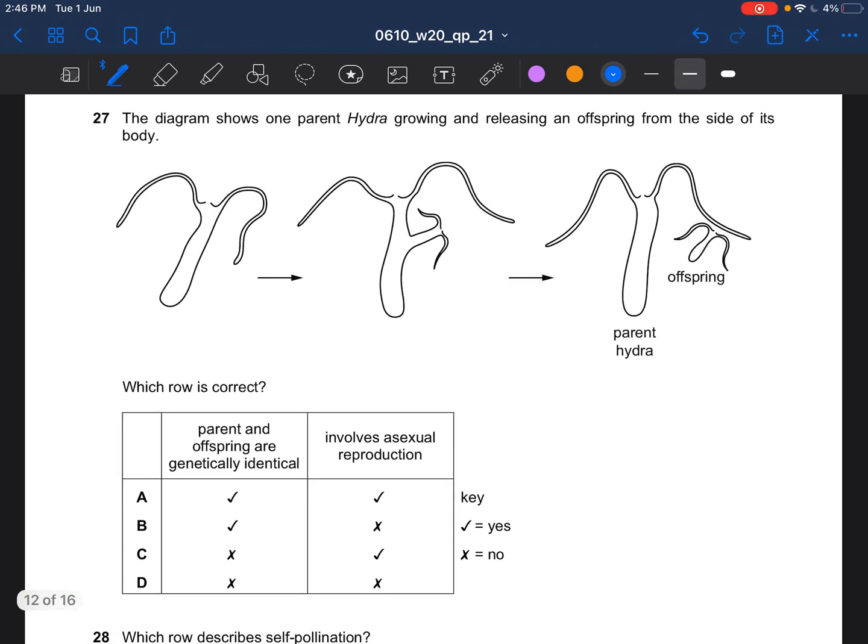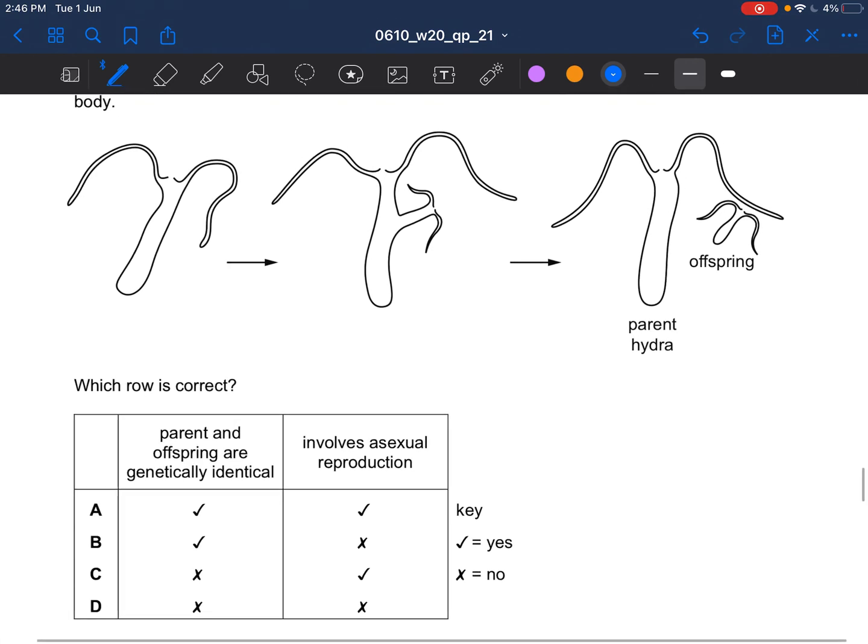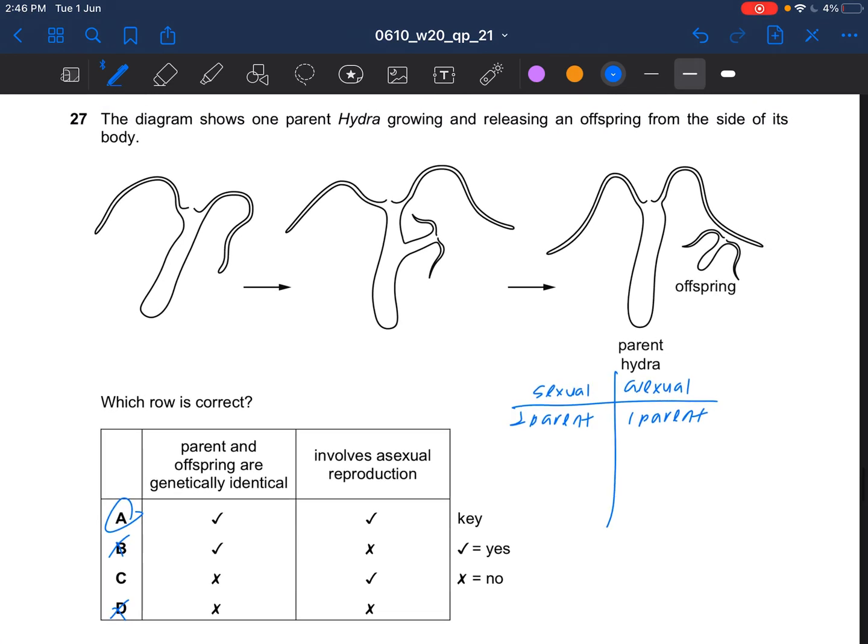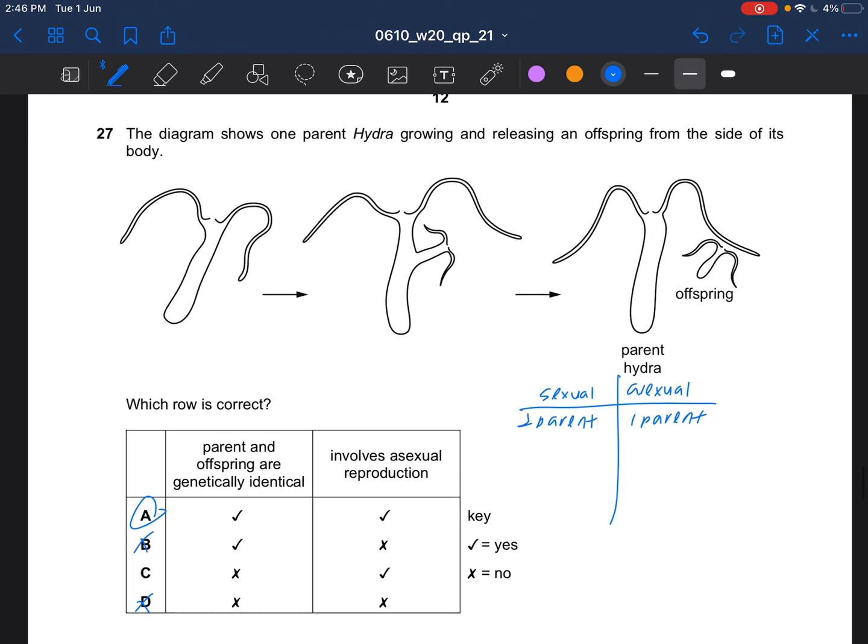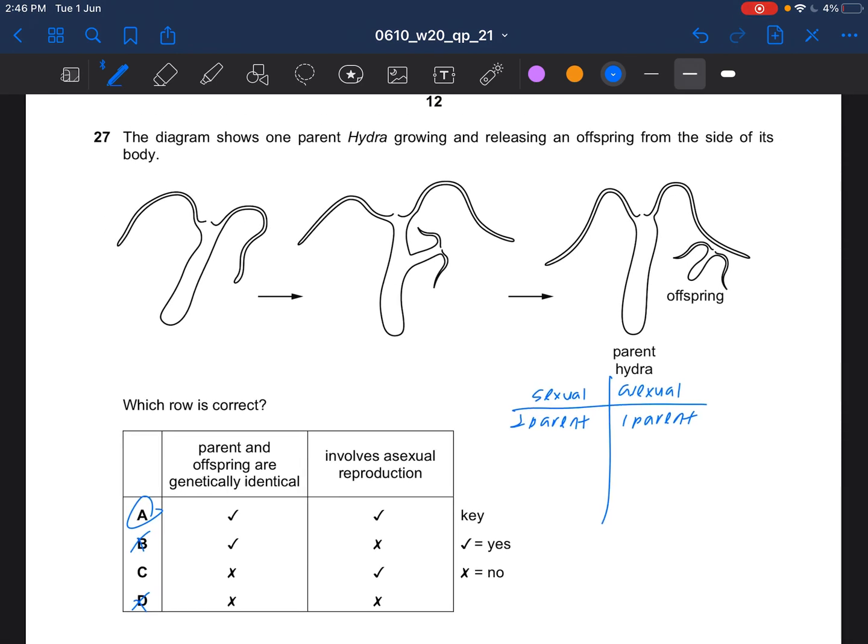Next question. The diagram shows one parent hydra growing and releasing an offspring from the side of its body. Which rule is correct? Since this one only involves one parent it would be asexual reproduction. One of the difference between sexual reproduction and asexual reproduction is that sexual reproduction involves two parents while asexual only requires one parent. In asexual reproduction there's no fusion of gametes. The offspring would be the clone of the parent, they'll be genetically identical.